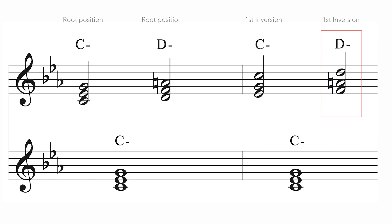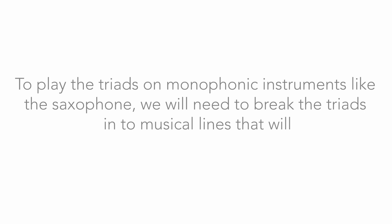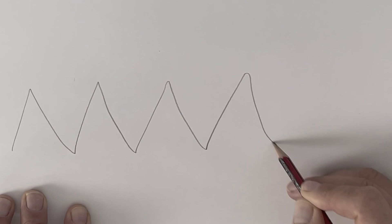To play the triads on monophonic instruments like the saxophone, we will need to break the triads into musical lines that will trace the sound of the chords.